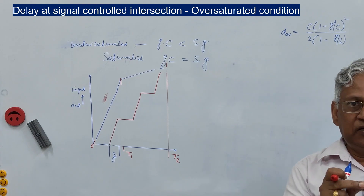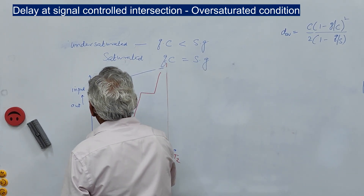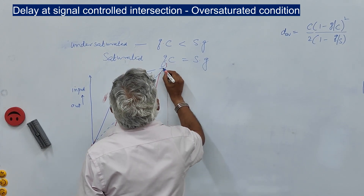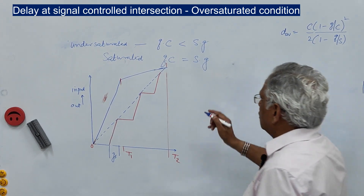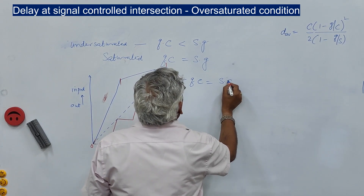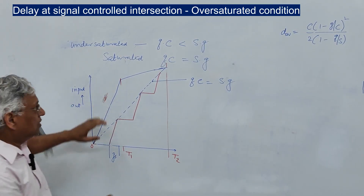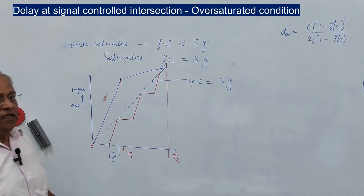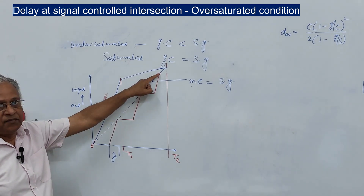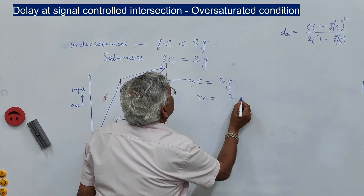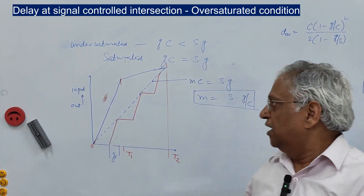The area between the input and output curves represents the delay. Drawing a dotted line indicates the situation where the cycle is completely saturated, i.e., QC = S×G. The actual flow Q is higher than this, so let us call the flow that creates complete saturation M. This M equals S×G/C, which is also the capacity of the signal intersection.